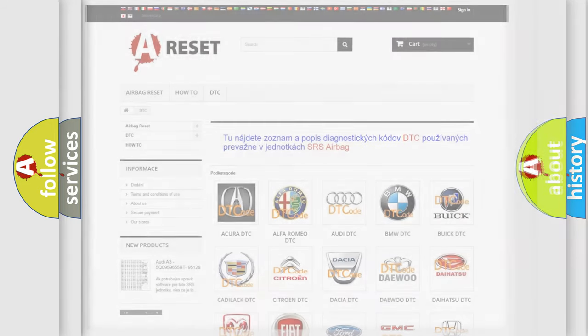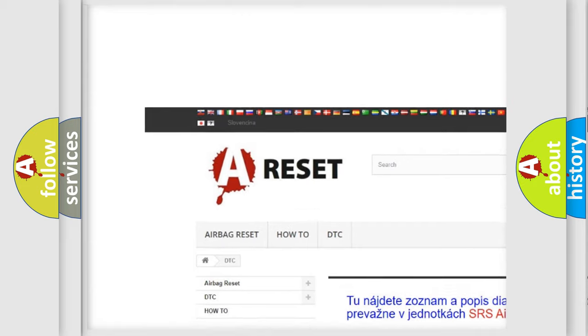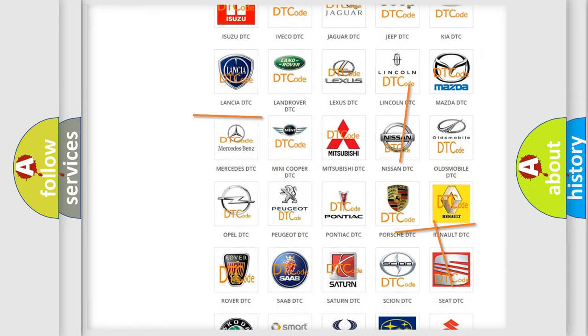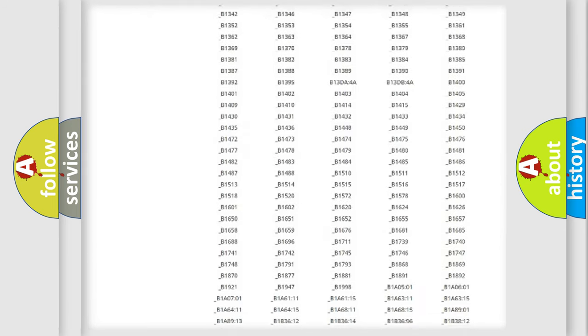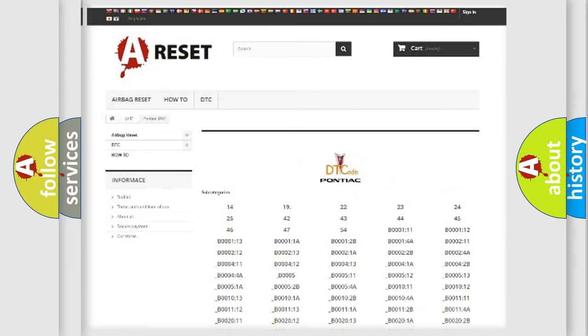Our website airbagreset.sk produces useful videos for you. You do not have to go through the OBD2 protocol anymore to know how to troubleshoot any car breakdown. You will find all the diagnostic codes that can be diagnosed in Pontiac vehicles, and also many other useful things.